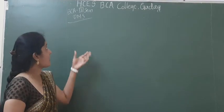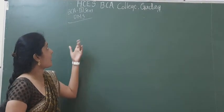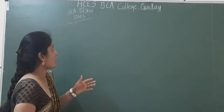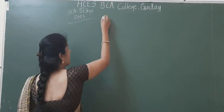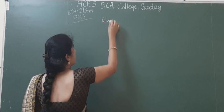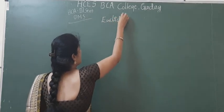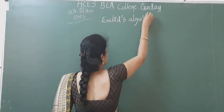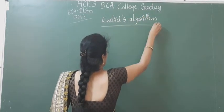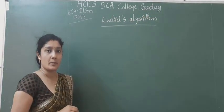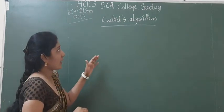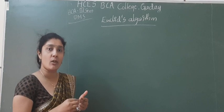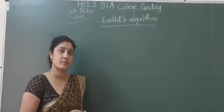Hello everyone, today we will discuss the continuation of our first class, that is DMS. Today we will study the Euclidean algorithm. What is this Euclidean algorithm? When two integers are given, we have to find out the GCD of those two integers.